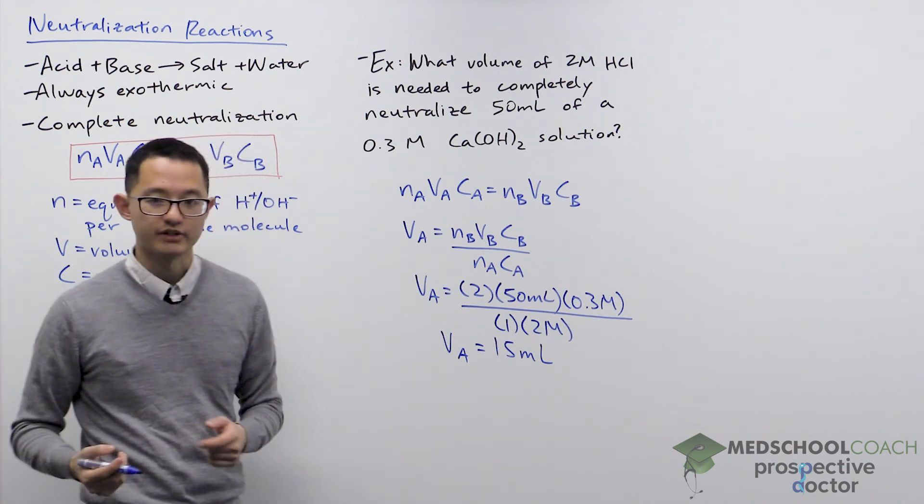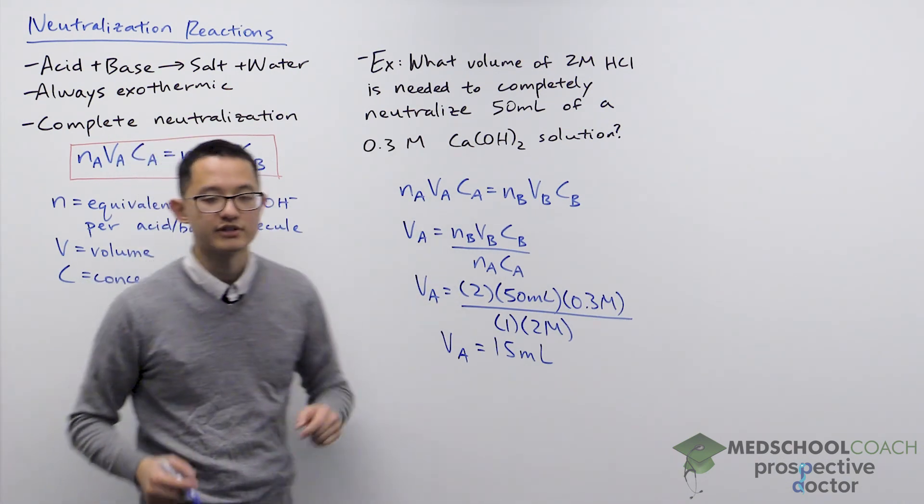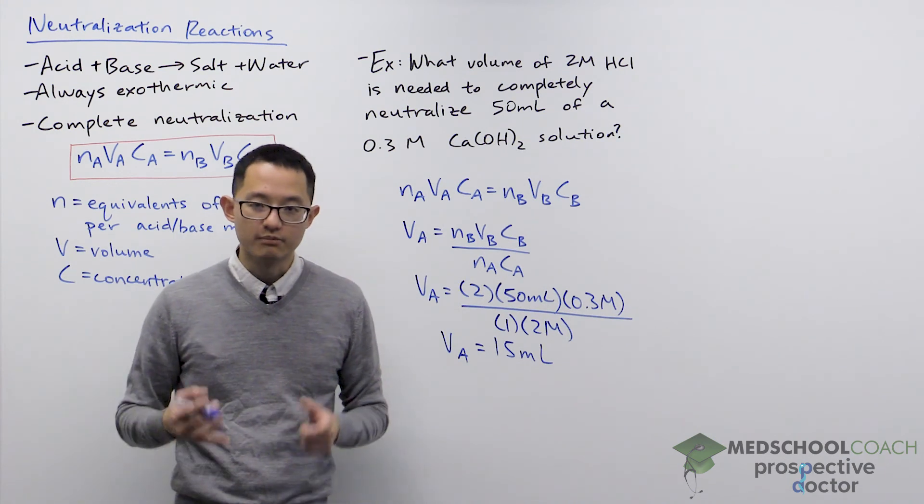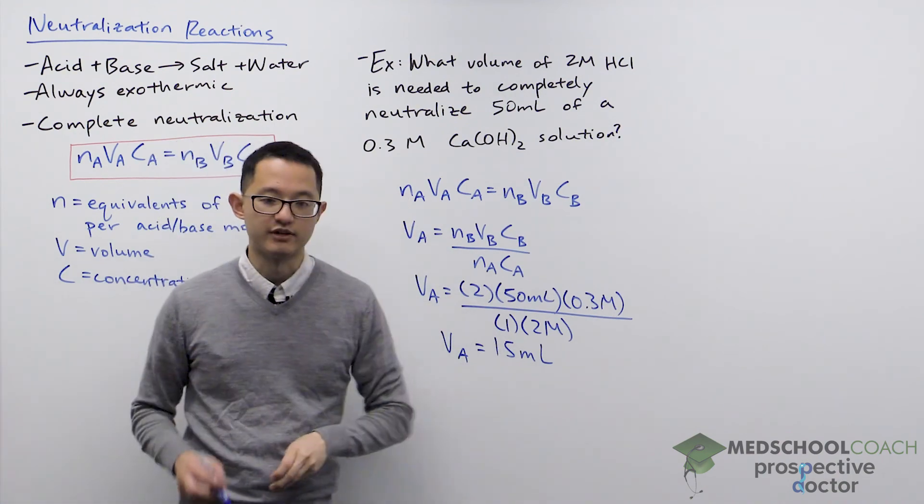So that would tell us, for this question, we want 15 milliliters of a 2 molar HCl solution in order to completely neutralize 50 milliliters of 0.3 molar calcium hydroxide.